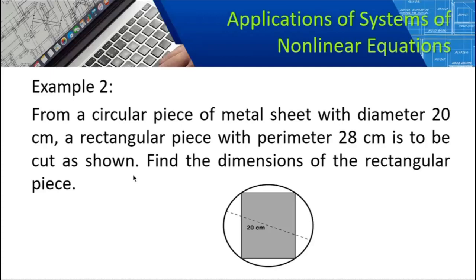Example number two. From a circular piece of metal sheet with diameter 20 cm, a rectangular piece with perimeter of 28 cm is to be cut. Find the dimensions of the rectangular piece. We have a circular piece of metal, and we cut a rectangular piece with perimeter 28 cm, while the circle's diameter is 20 cm.